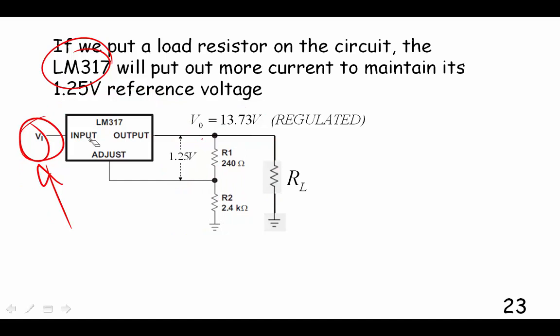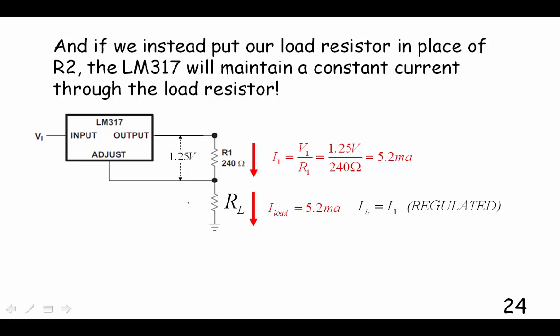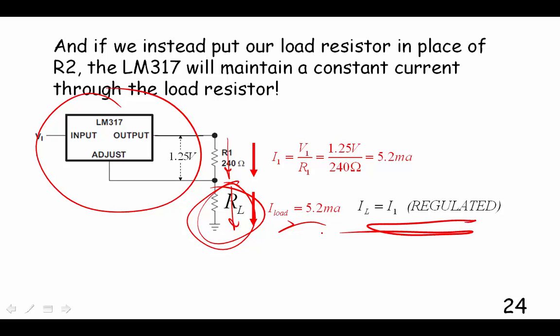And if we instead, see here's where the load resistor was put here in the circuit before, but what if we put the load resistor right here? We take it out at that point. Then what's going to happen is this LM317 is going to keep the same amount of current going through the load, no matter how we adjust the resistance of that load. So that's a regulated current creator.